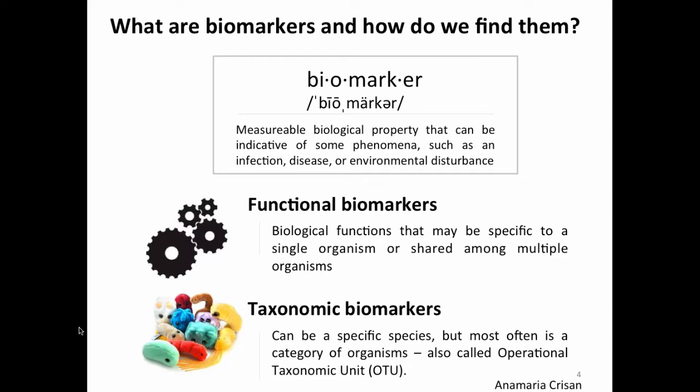There are two types of biomarkers: functional biomarkers, which may be specific to single organisms or provided by any one of a number of organisms but indicate what's happening in a sample; and taxonomic biomarkers, such as a specific species or category of organisms, more commonly known as operational taxonomic units.